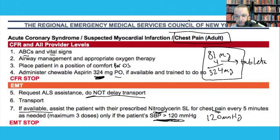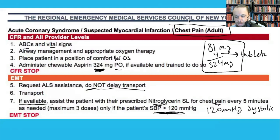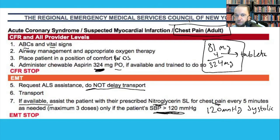Check blood pressure and confirm it's at least 120 mmHg systolic before nitroglycerin. If blood pressure drops below 120, you can no longer administer nitroglycerin. My advice: make sure the patient is sitting down or on your stretcher before giving nitroglycerin. Some patients vasodilate so profoundly they may lose consciousness, and if ALS hasn't arrived yet, you don't have IV access to give fluids. Nitroglycerin causes profound vasodilation and may cause a headache.